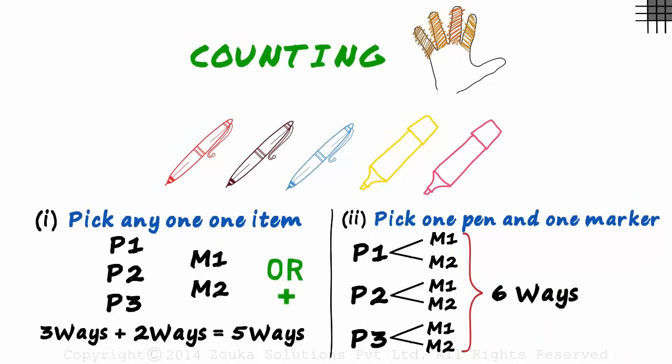Which are the six ways? P1 M1, P1 M2, P2 M1, P2 M2, P3 M1, and P3 M2. And how did we get a six? Three ways times two ways. Multiplication.